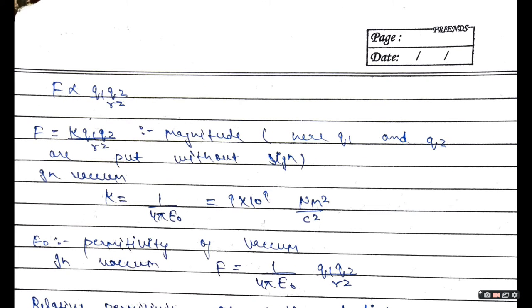Force is directly proportional to Q1 Q2 upon R square. जब भी किसी formula में proportionality हटानी होती है तो हम किसी constant का use करते हैं, जो कि यहाँ पे है K। तो हम लिख सकते हैं: Force is equal to K Q1 Q2 upon R square.